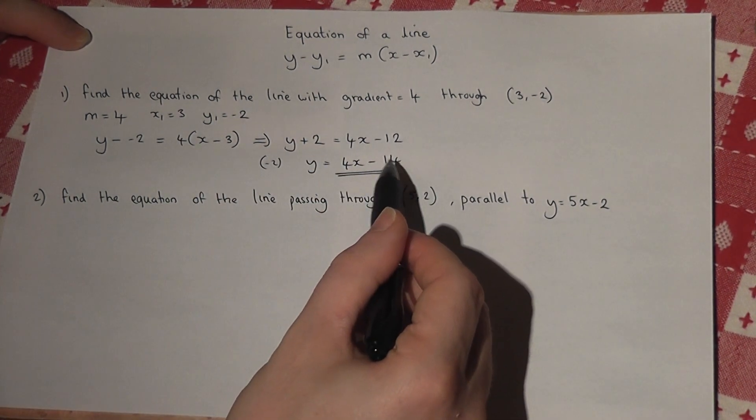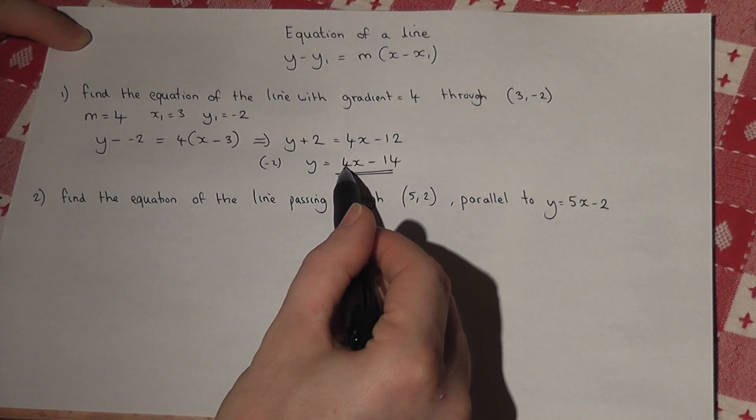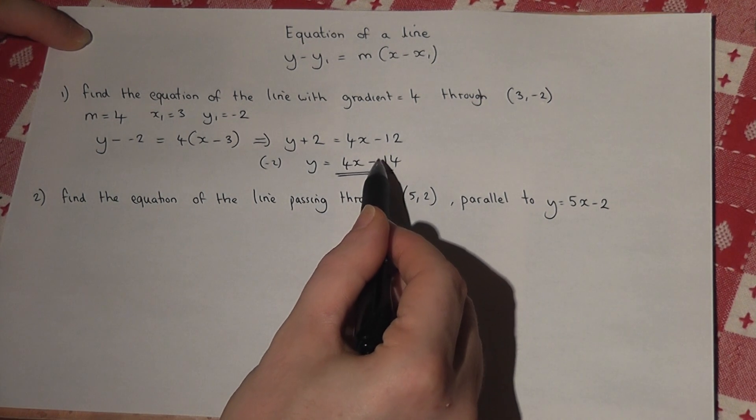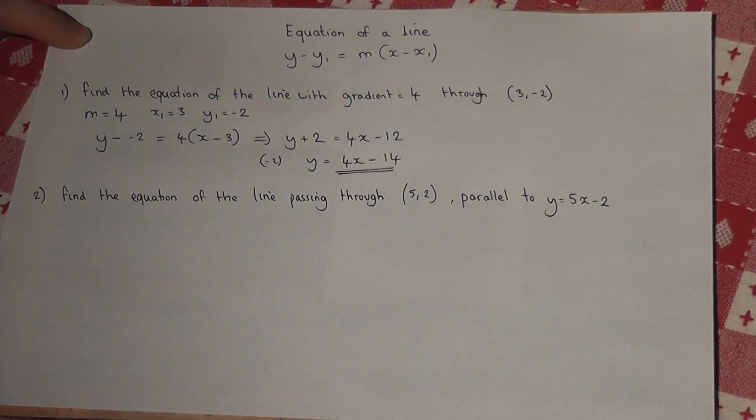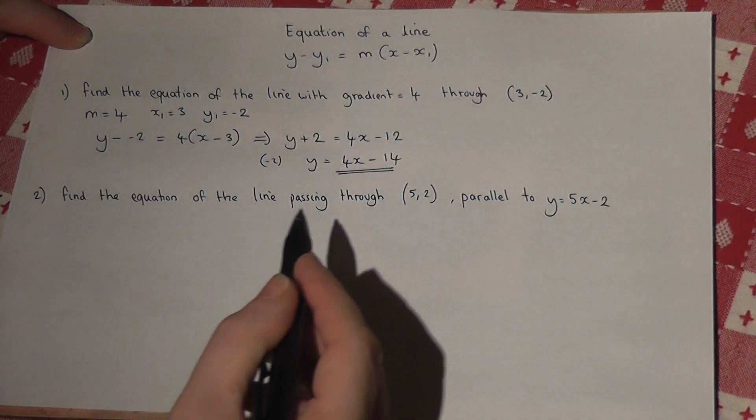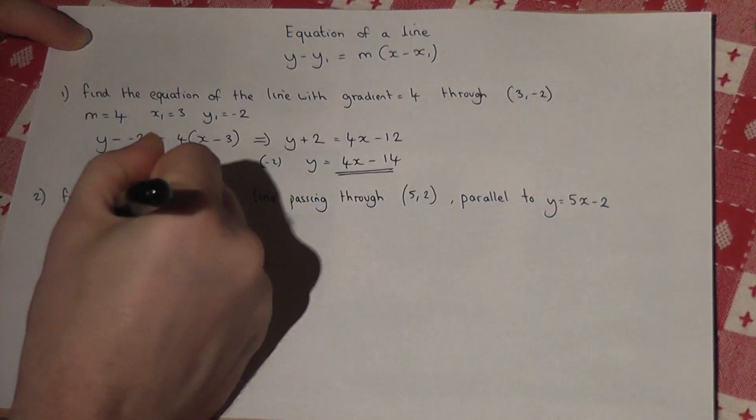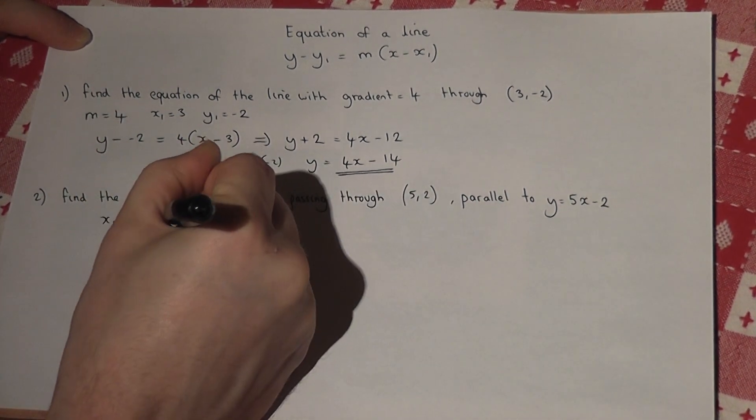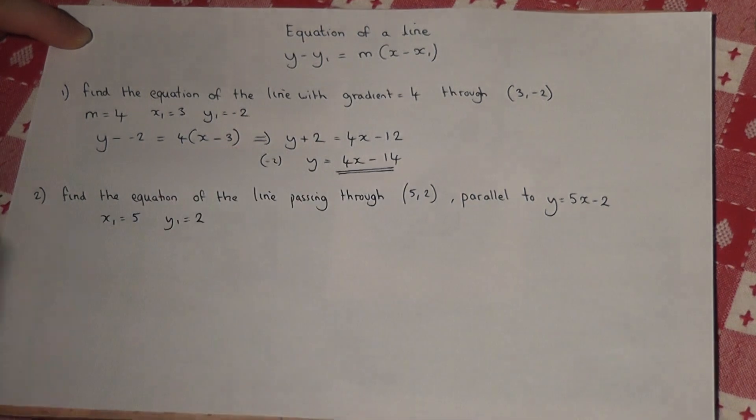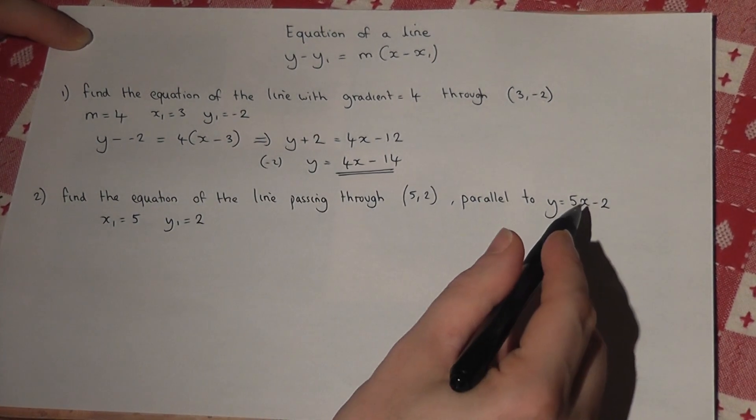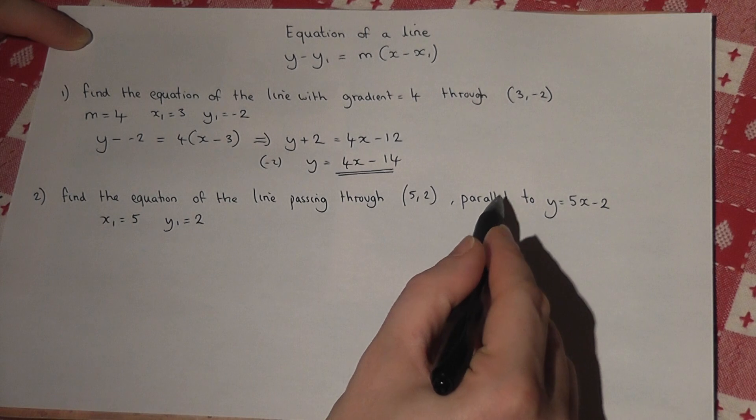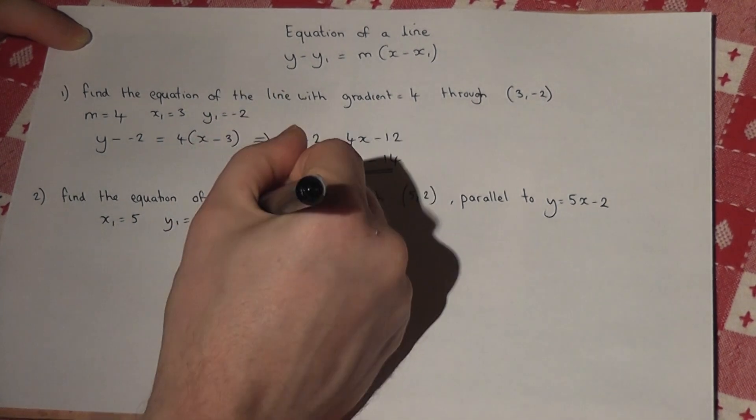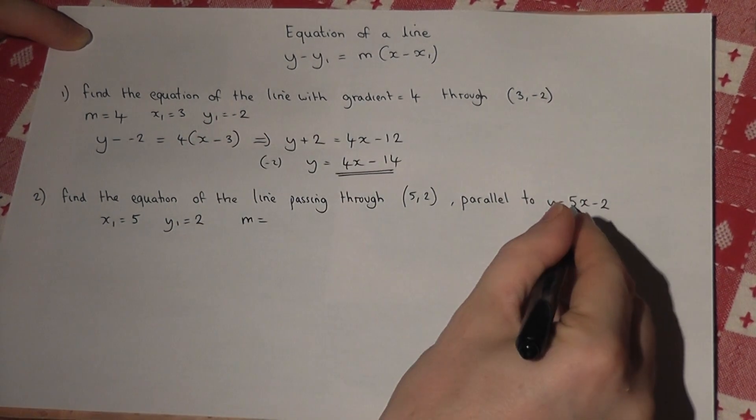The second question uses the same technique. We're told the coordinate, so x1 equals 5 and y1 equals 2, but it's now parallel to another line. If it's parallel, it must have the same gradient, so the gradient must equal 5.